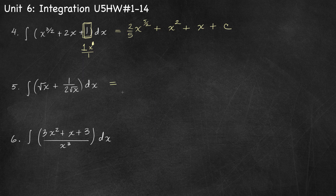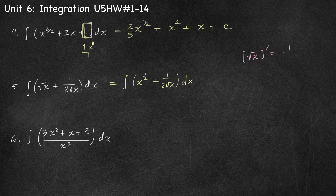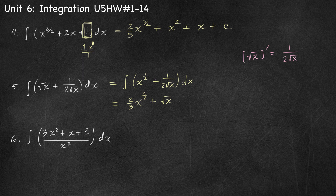Number 5, I think it's easier to integrate the square root of x if you rewrite it as x to the power 1/2, but easier to integrate 1 over 2 root x by leaving it as is — because that's a derivative rule we've memorized. The derivative of root x is 1 over 2 root x, so the antiderivative of 1 over 2 root x is just root x. For x to the 1/2, we use the power rule: add 1 to get x to the 3/2, then divide by 3/2. So the full answer is 2/3 x to the 3/2 plus root x plus c.